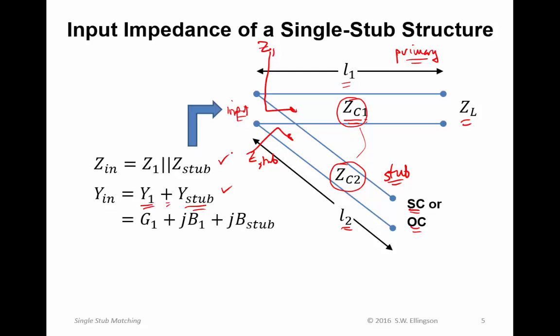We can write this in terms of real and imaginary parts of admittance, in which case we get Y1 equals G1 plus jB1, and then the admittance of a stub, which is entirely imaginary valued. So we can write this as jB_stub. That's because G_stub is 0. The real part of the admittance is 0 for a stub that's open-circuited or short-circuited. I can gather up the terms here, so that the total input admittance equals G1, the real part of the admittance of the primary line, plus the susceptances of the primary line and the stub. This is now the expression for the input admittance of the single stub structure.